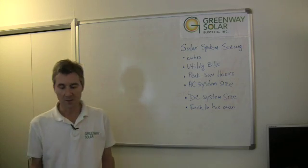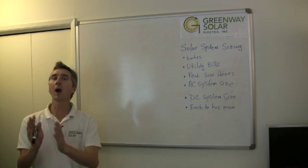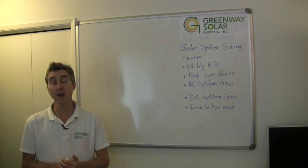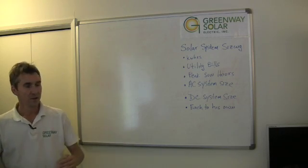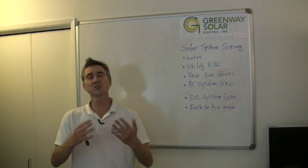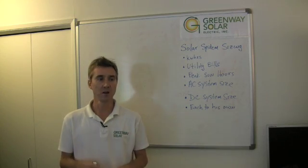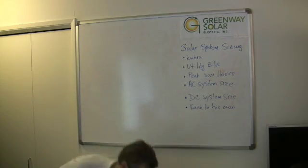Now, the utility companies charge us for every kilowatt hour we use, and it depends on what utility you have on how much they charge you. So a typical Los Angeles DWP customer gets charged around 14 to 15 cents per kilowatt hour. So let me just recap on that point a little bit.